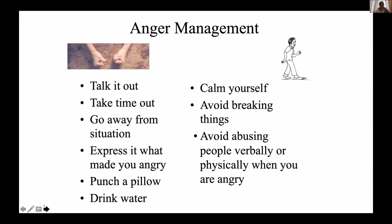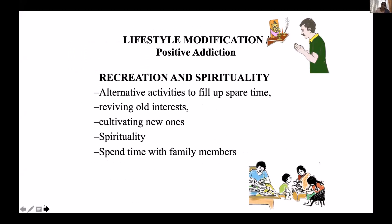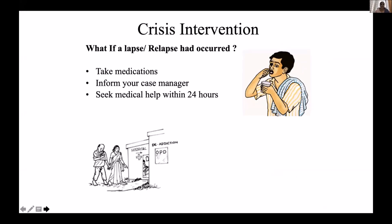Anger management can be applied cognitively or psychosocially. Lifestyle modification is a very useful technique — it involves developing positive addictions, such as being addicted to going to the gym, walking, or physical exercise. Getting patients into recreation and spirituality is also very helpful for handling craving. When crises arise beyond their capacity, they should seek help from a case manager or medical attention immediately, as crisis intervention can prevent lapse or relapse.